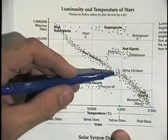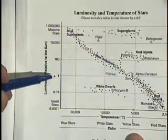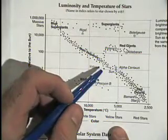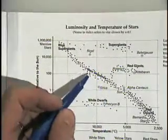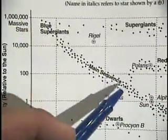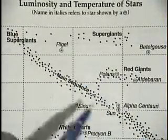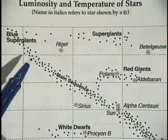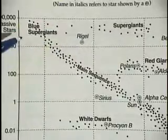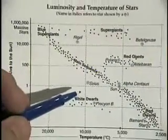Now, its luminosity — you follow the dotted line over, and it has a luminosity of one. The sun is part of a very large grouping of stars, the largest grouping of stars, something called the main sequence. The main sequence makes up most of the stars in our galaxy and the universe. And there are others, like red giants, supergiants, blue supergiants, and white dwarfs — those are other groups of stars.